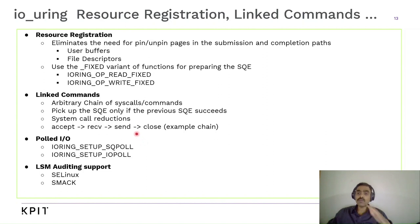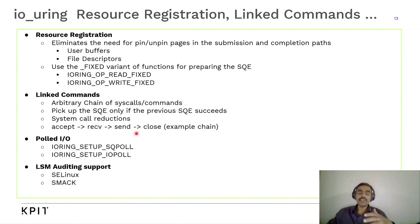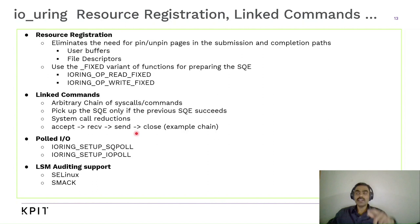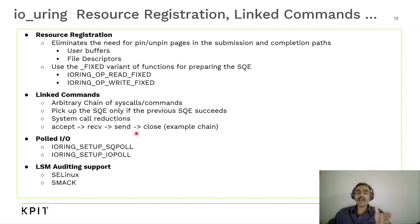IO-Uring also provides what's called Polled IO. With SQPoll, there is a kernel thread that polls the submission queue for any new SQEs added. This helps in very low latency use cases where, instead of doing a system call to notify the kernel about a new SQE, the kernel keeps polling the submission queue at regular intervals. Mind you, this has an impact on CPU usage, but it is for cases where latency is of primary importance.